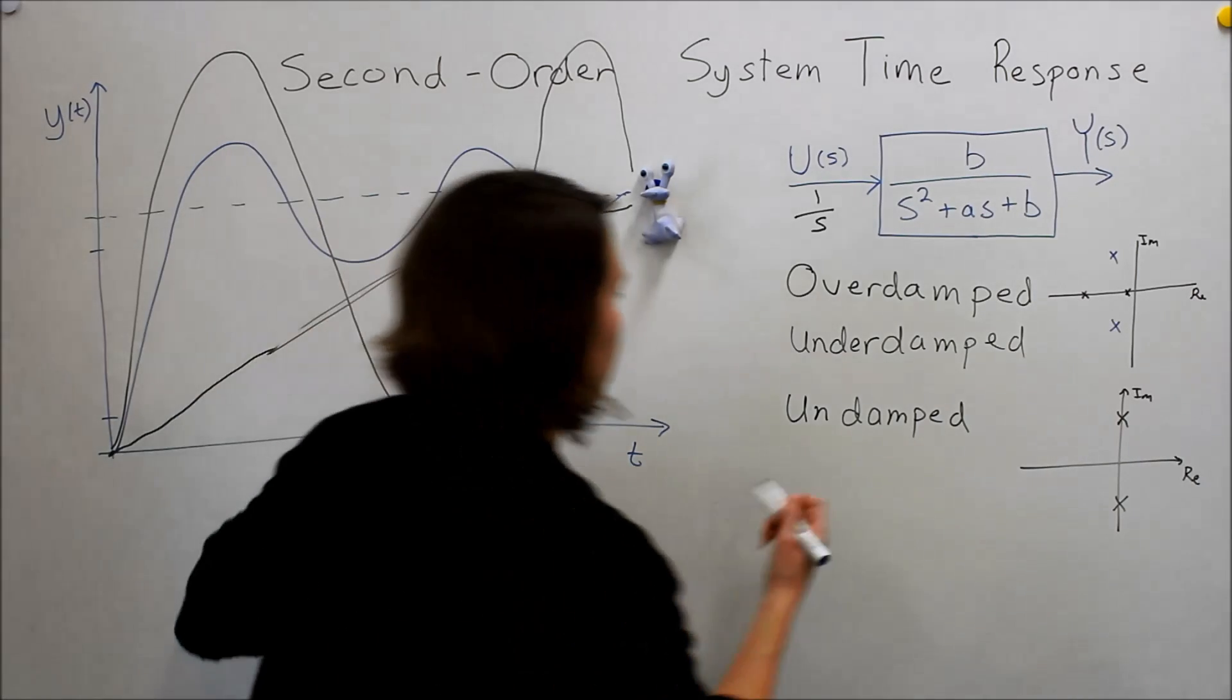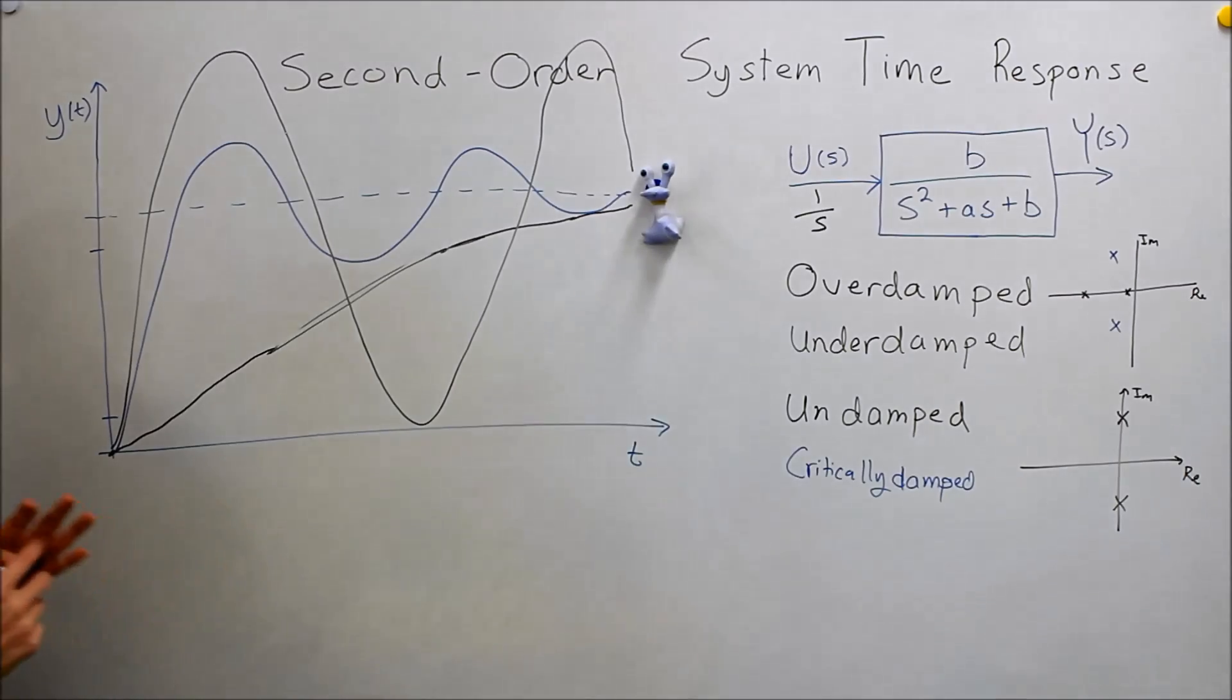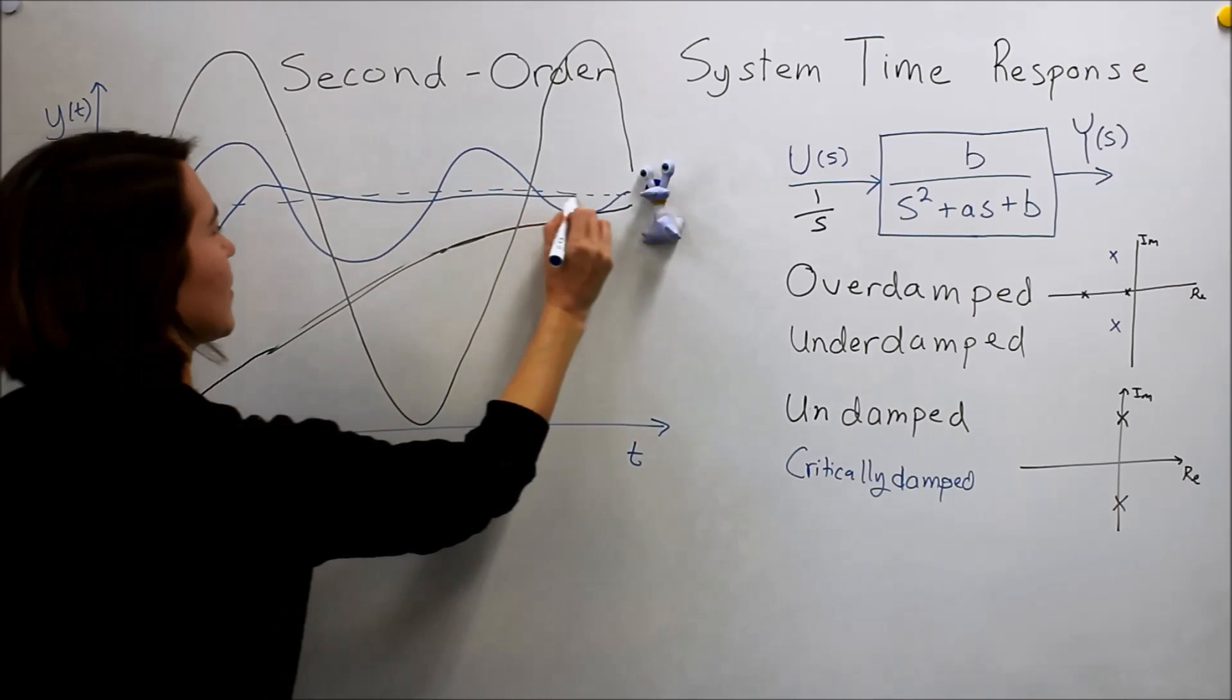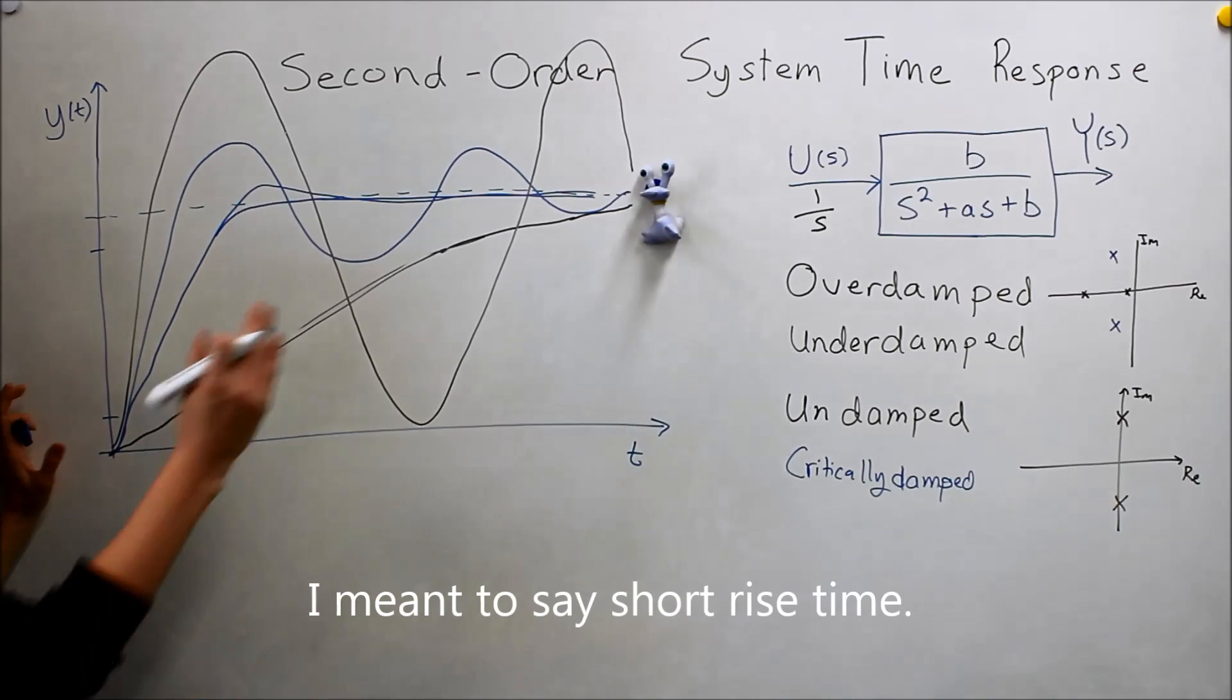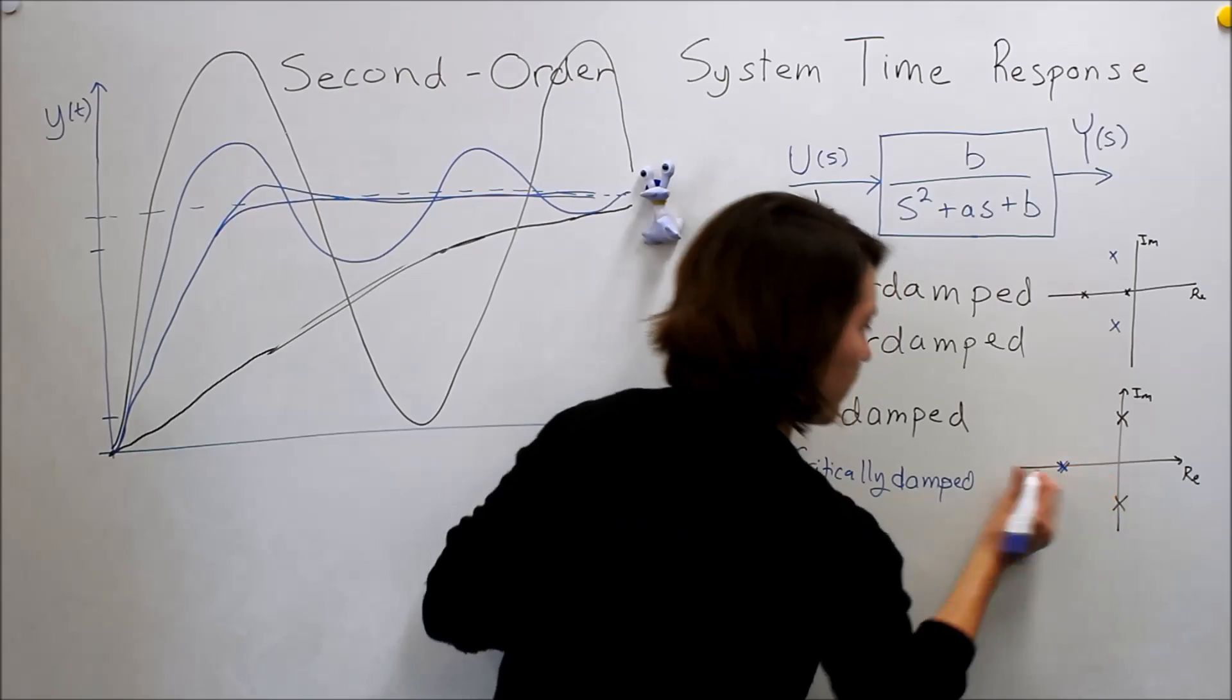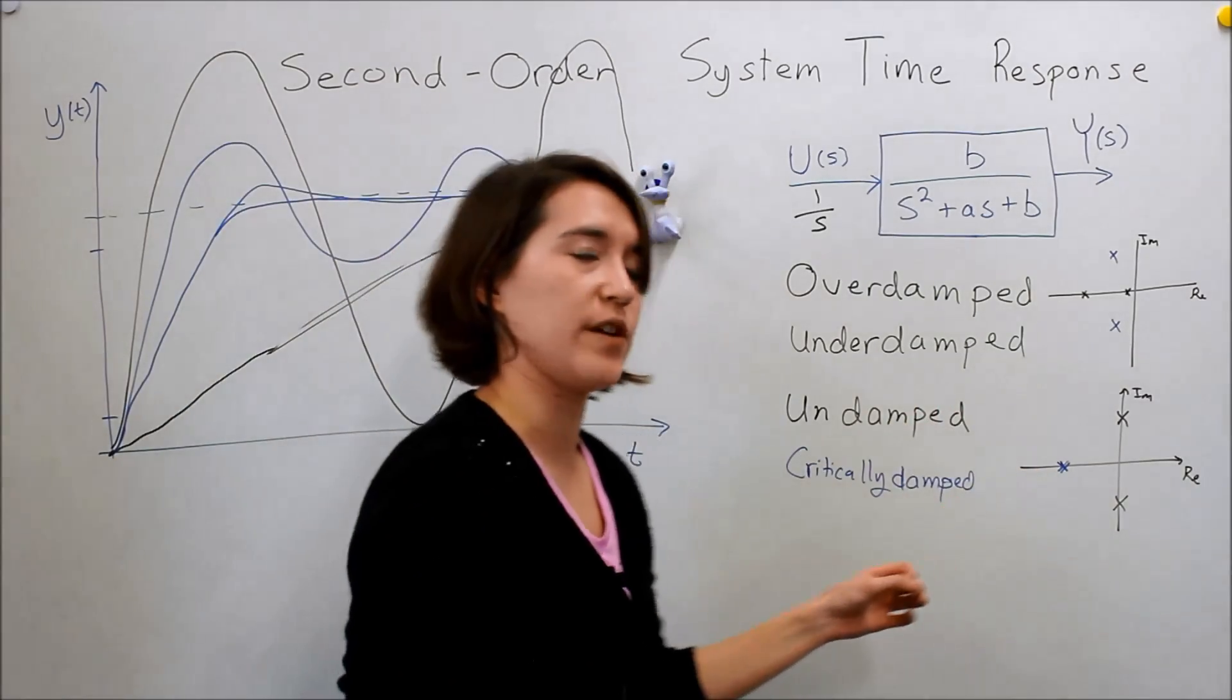And then our last one, we're going to call it critically damped. This one is what we want to have, generally. This one goes up, it maybe does a little tiny bit of overshoot, but then goes right to it. Actually, I think there's very little overshoot. Just goes pretty fast. This one has a very high rise time and a fast settling time, or short settling time. This is kind of the ideal performance if we want things to move quickly. For that, we have either two poles right on the real axis, or there's some other pole positions that could be ideal for what you want. But critically damped in this case would be where the poles are right on top of each other on the real axis.